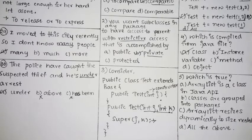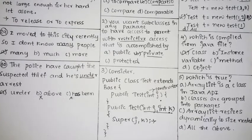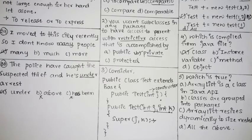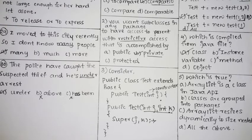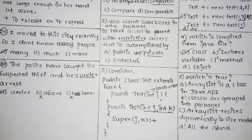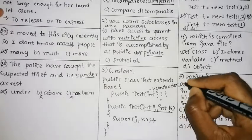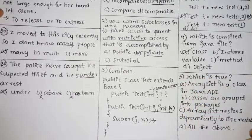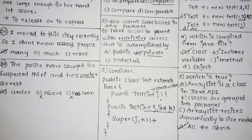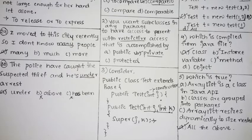A regular array is static — its size is constant. To overcome this, Java provides collections like ArrayList, which is a dynamic array that can resize whenever needed. Since all three options are correct — ArrayList is a class, classes are grouped into packages, and ArrayList resizes dynamically — the answer is all of the above.